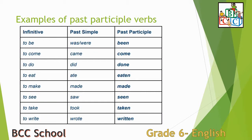Now, let us take a look at some examples of past participle verbs. These verbs are irregular verbs — you have to memorize them. To be: been. To come: come. To do: done.